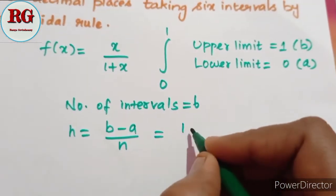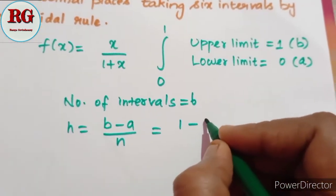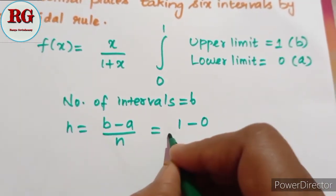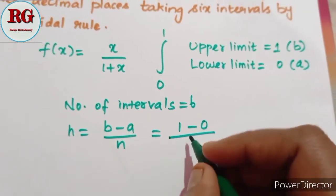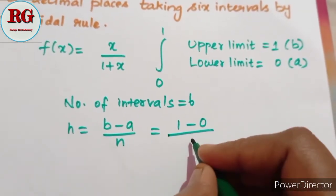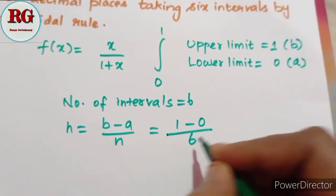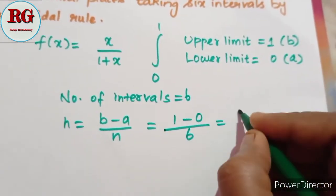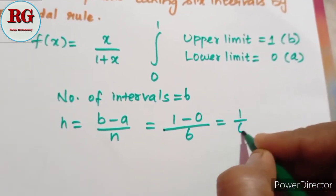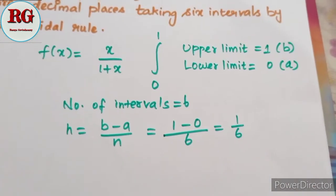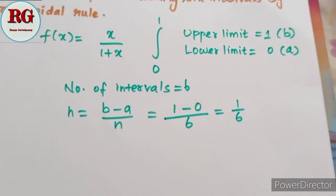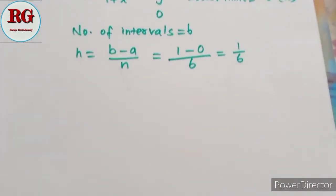So b is equal to 1, a is equal to 0, and n is equal to 6. Therefore h equals 1 divided by 6. So the interval width is 1/6.